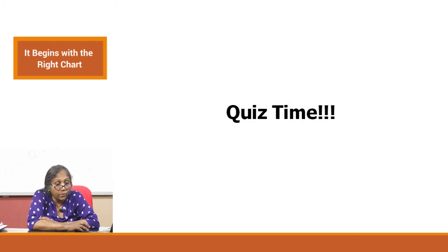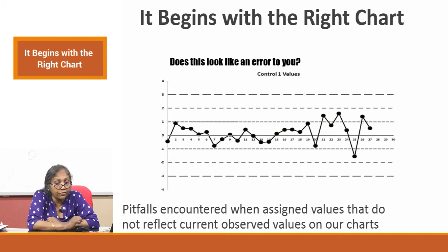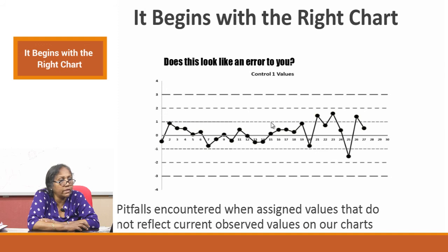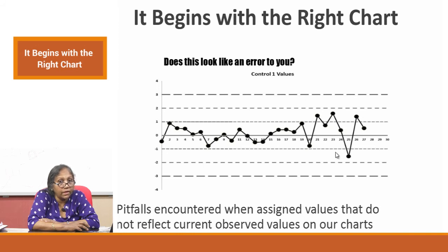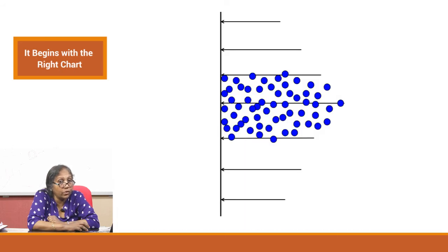Let us look at a quiz using a graph from a published paper. This is level 1 control values, and from around the 18th run onwards, you see some fluctuation. You might say it is okay because it is within the 2 SD limit. But was this correct to start with? No — you cannot have all your runs sitting in the 1 SD region. Looking at it on a Gaussian, all points are coming in the 1 SD region, which is not how a Gaussian works.